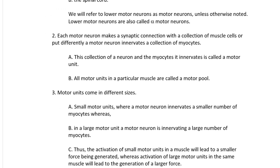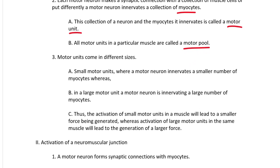Each motor neuron makes a synaptic connection with a collection of muscle cells — put differently, a motor neuron innervates a collection of myocytes. Myocytes are the technical name for muscle cells. This collection of a neuron and the myocytes it innervates is called a motor unit. A single motor neuron can synapse with multiple myocytes, and that collection of a single neuron and the myocytes it innervates is called a motor unit.